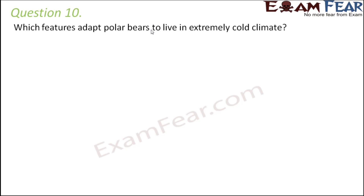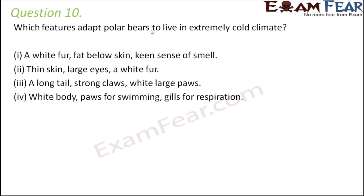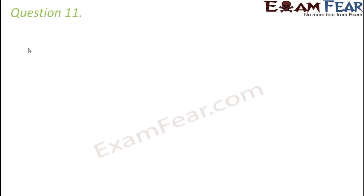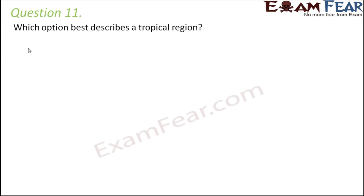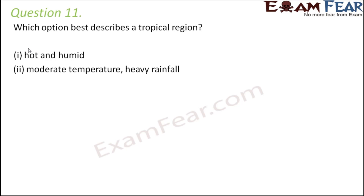Question number ten: which features adapt polar bears to live in extremely cold climate? White fur — yes, because the white color blends with the white background of snow. Fat below the skin — yes, because it provides insulation and warmth. Keen sense of smell — yes, because this strong smelling sense helps them detect and catch their prey. So all three options are correct.